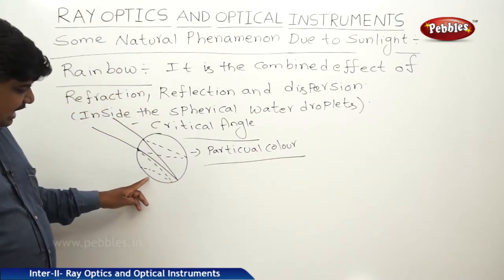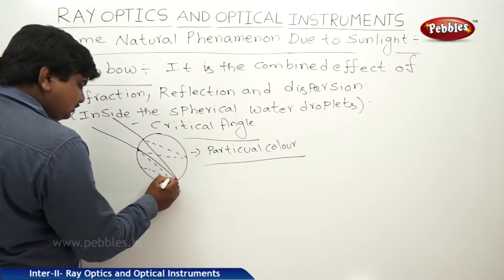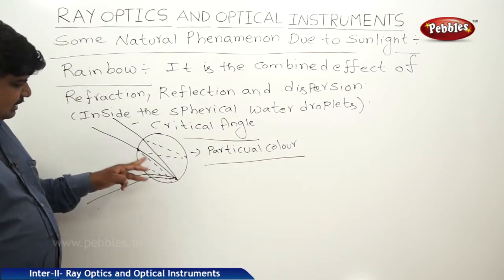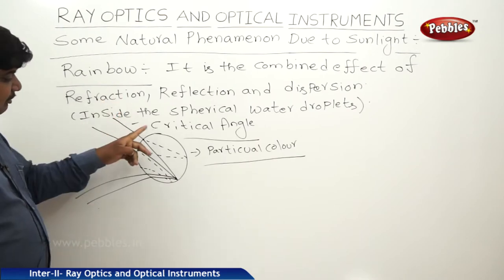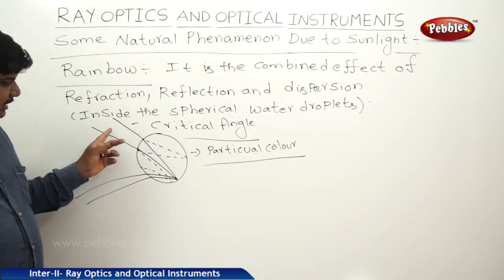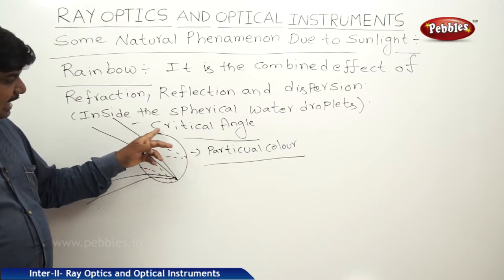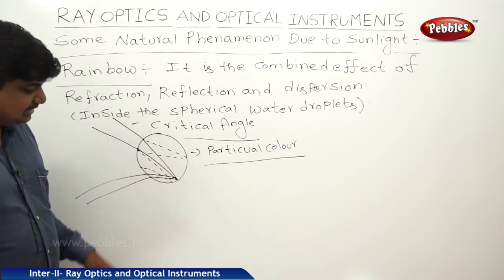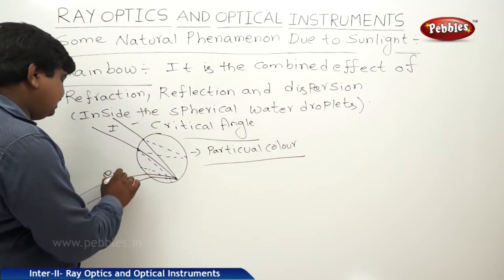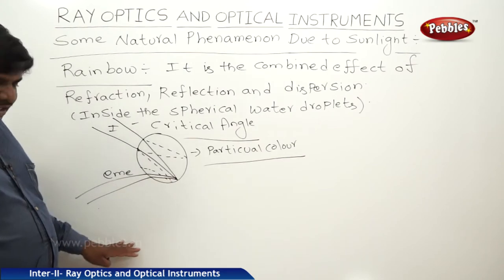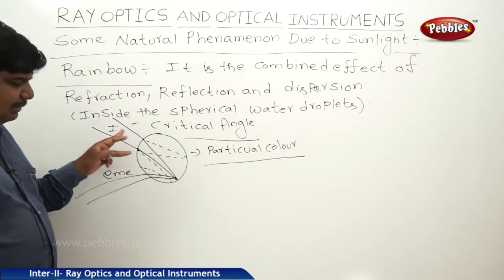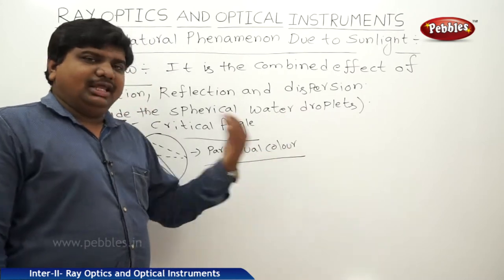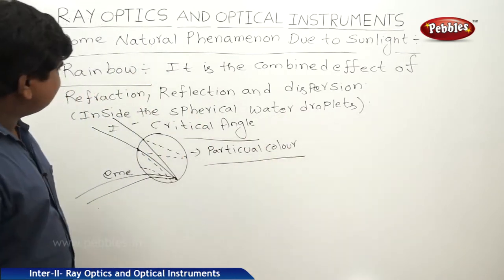Whenever these light rays emit out of the spherical droplets, they emit the natural radiation of the sunlight that was incident. The process is: incident light undergoes refraction, and if the incident angle satisfies the critical angle, it undergoes total internal reflection and emerges out. Water droplets at a particular angle of incidence will reflect a particular color wavelength — all red, all yellow, all green — and that is how we can observe the rainbow.